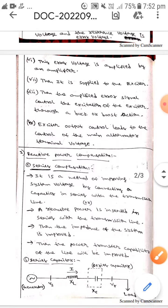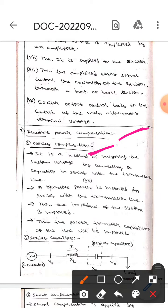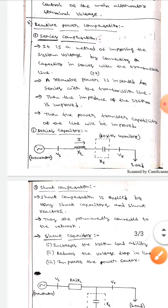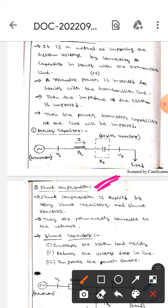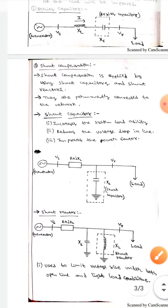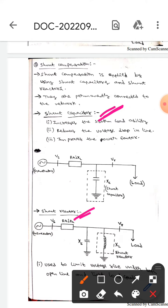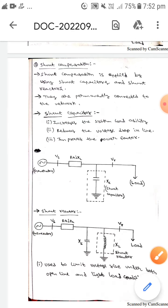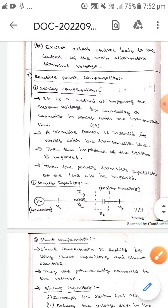This is all about reactive power compensation, series compensation, and shunt compensation. In shunt compensation there are two types: shunt capacitor and shunt reactor compensation. I hope you understand guys. Thank you.